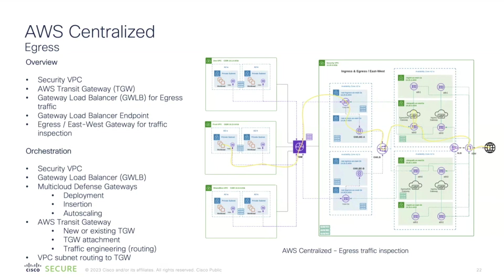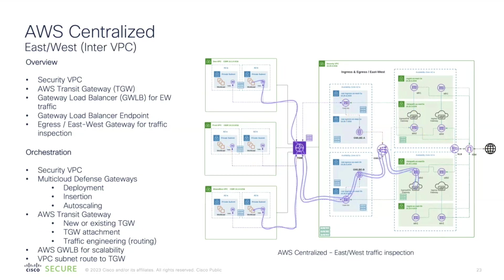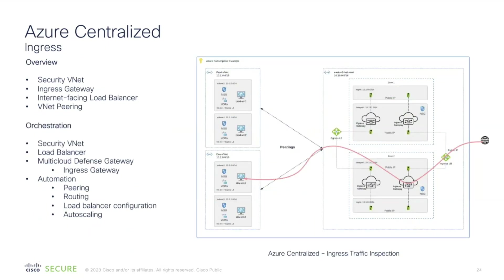For egress flow — traffic initiated from your application to the internet — traffic first goes to the transit gateway, which sends it to the gateway load balancer. Between the gateway load balancer and our egress gateway, we have Geneve running, which embeds an identifier into the protocol to ensure traffic symmetry across multiple egress gateways. For east-west, traffic goes to the transit gateway, then gateway load balancer, then to multi-cloud defense gateways for inspection, and back to the destination VPC via the same route. All automation associated with this traffic flow is handled automatically by the controller.